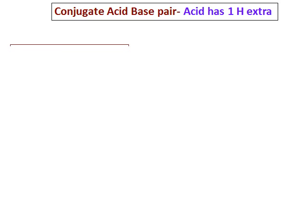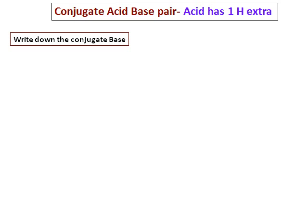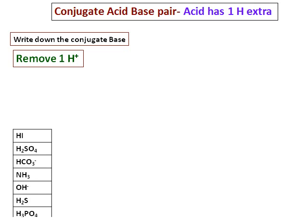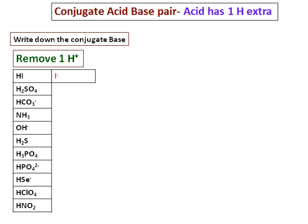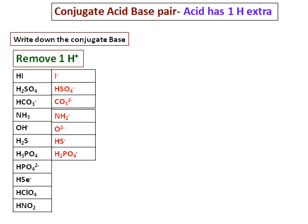Let's do some questions on conjugate acid-base pairs. Remember, the acid part has one hydrogen extra. If the question says write down the conjugate bases, since the acid has one hydrogen extra, remove a hydrogen plus from all the acids given. For example: HA gives A minus; H2SO4 gives HSO4 minus; bicarbonate HCO3 minus gives CO3 2 minus; and HNO2's conjugate base after removing one hydrogen becomes NO2 minus.